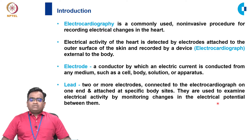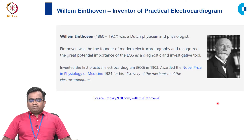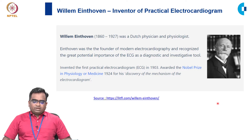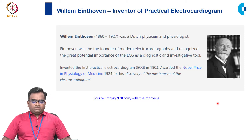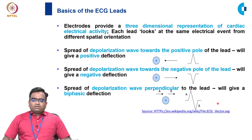In turn, the ECG machine records the electrical activity on moving paper. William Einthoven, the inventor of the practical electrocardiogram, was awarded a Nobel Prize in 1924 for his discovery of the mechanism of the electrocardiogram.